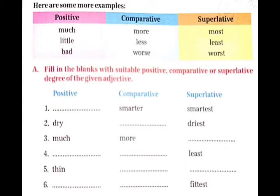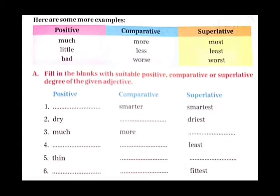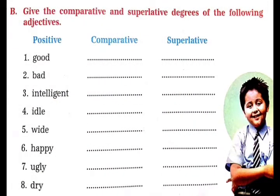Exercise A: Fill in the blanks with suitable positive, comparative और superlative degree of the given adjective. नीचे दिये गया adjective के suitable positive, comparative या superlative degree से fill कीजिये. जैसे comparative है 'smarter', superlative है 'smartest' तो आप यहां पर 'smart' fill करेंगे. Exercise B: Give the comparative and superlative degrees of the following adjectives.